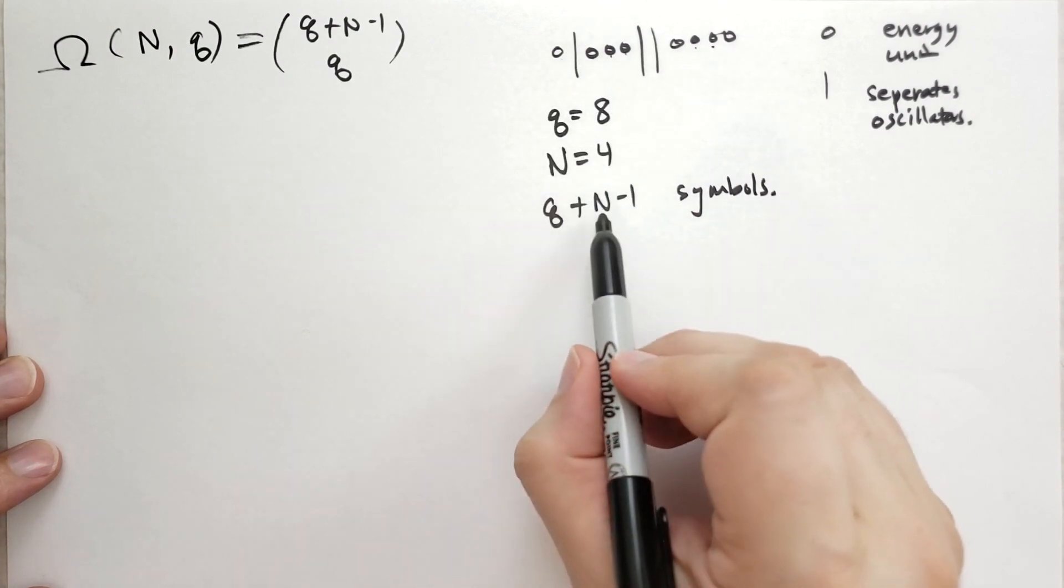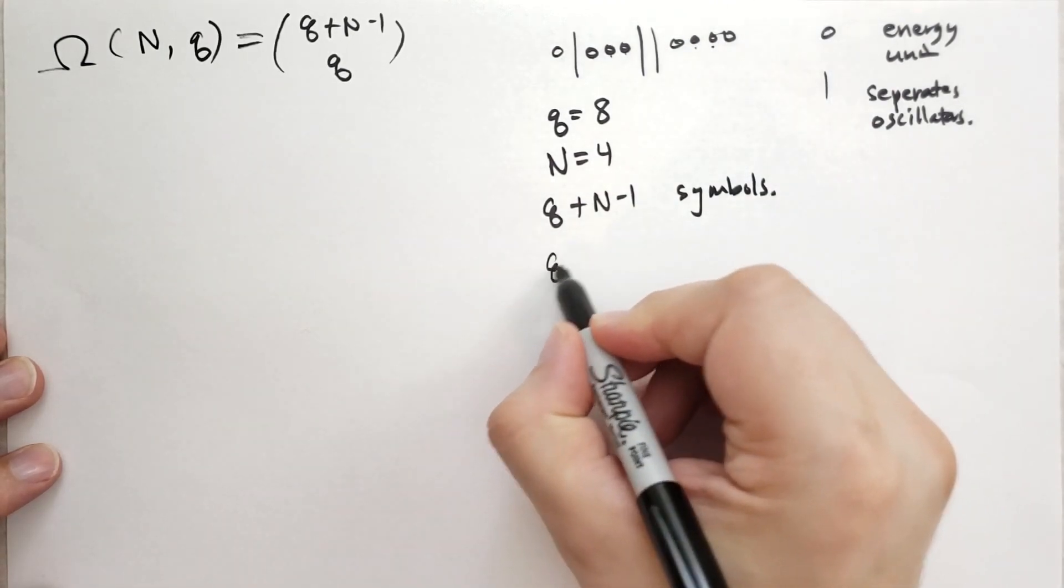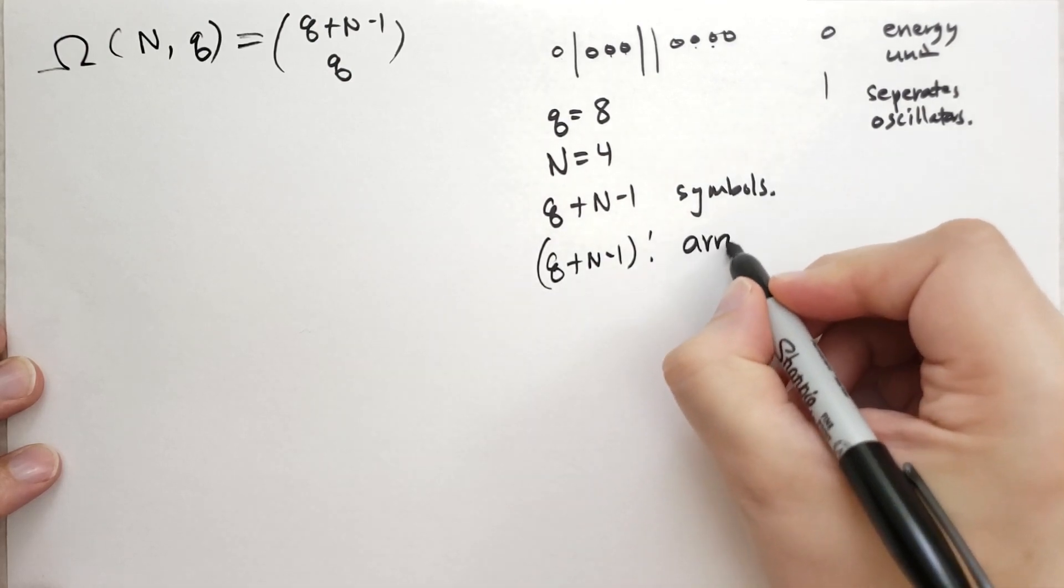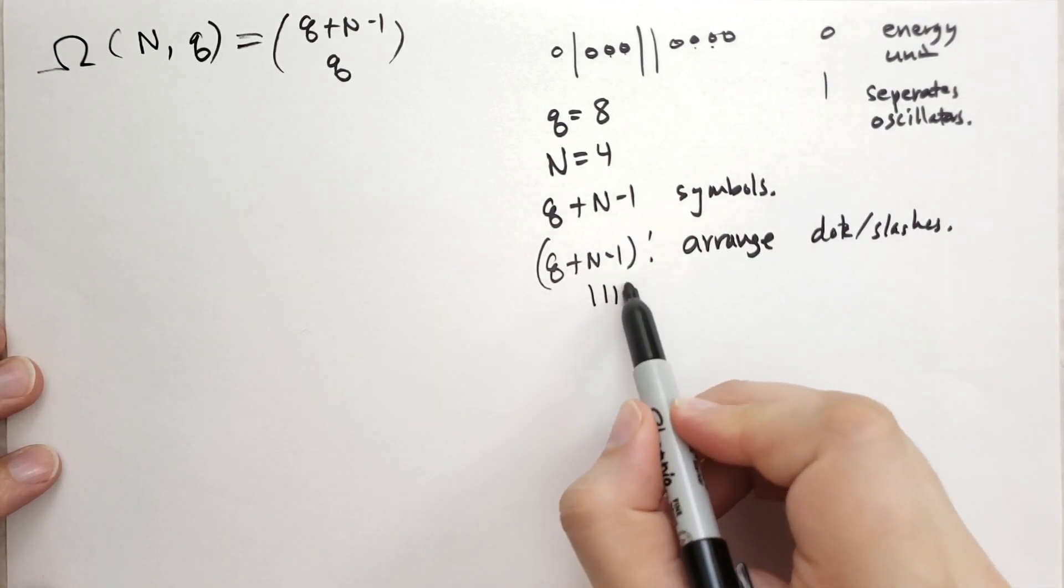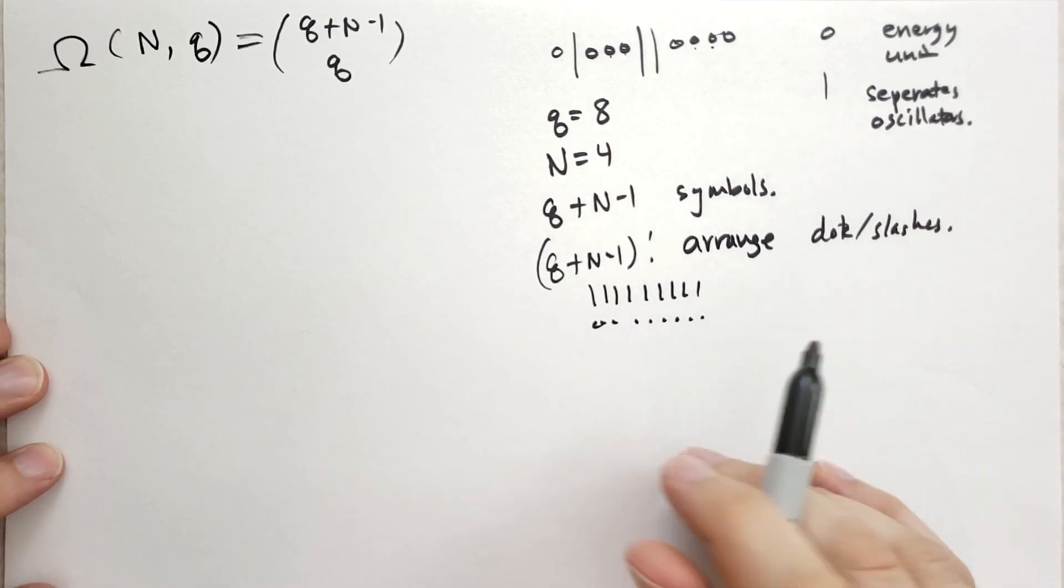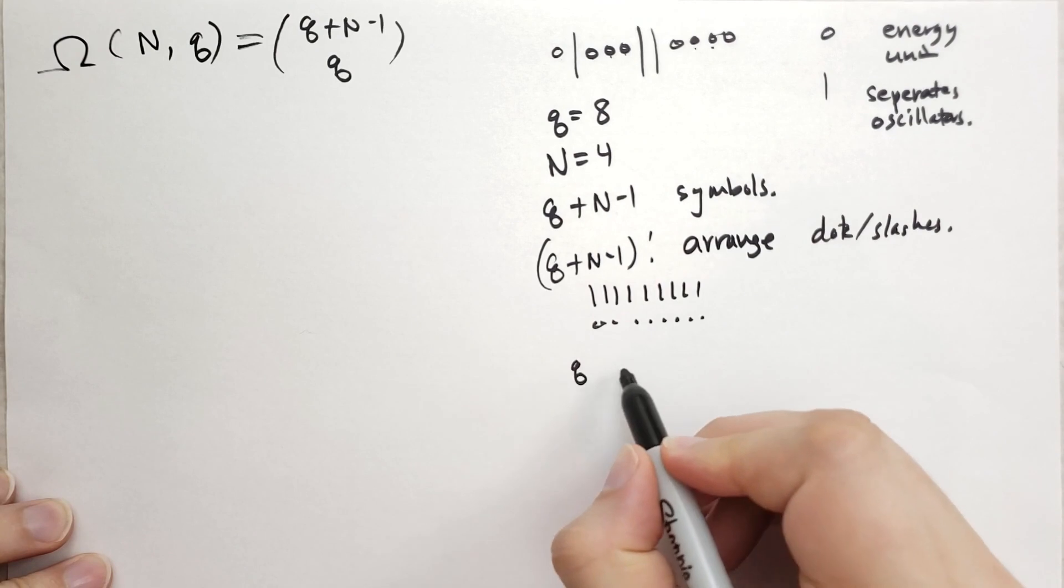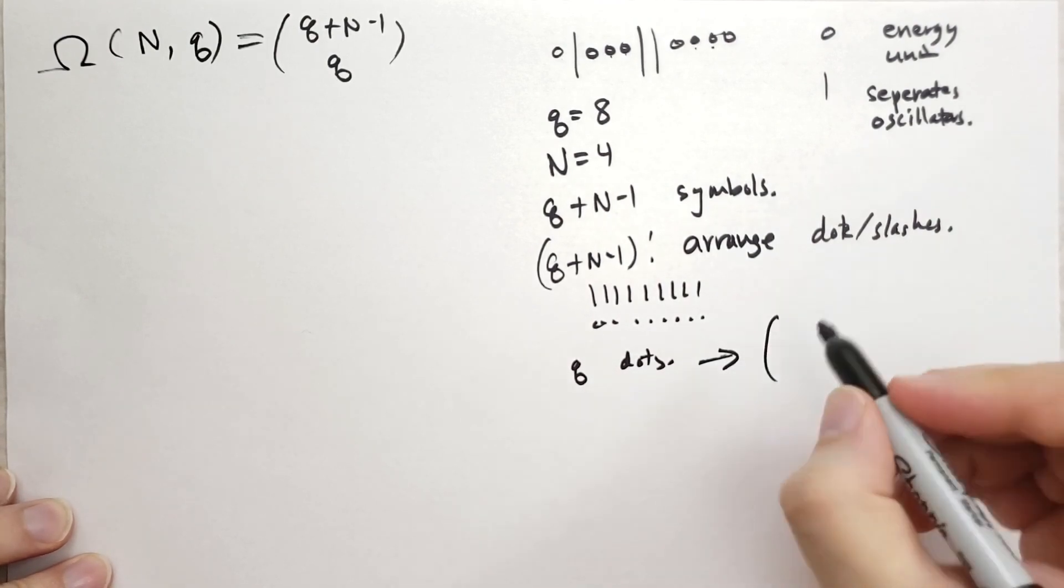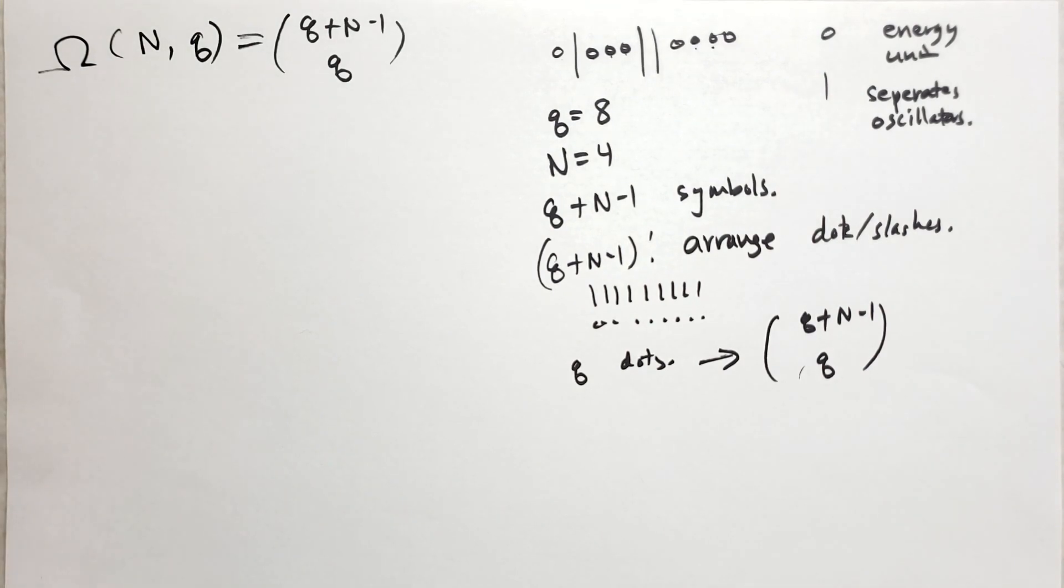So you need a symbol for each dot, and you need N minus one slashes. So if there's four oscillators, you need three separators. So that means there are Q plus N minus one ways to arrange the dots and slashes. This would include everything a slash. It would include everything a dot. And so what we need to do is choose only the ones that have a certain number of symbols. There are Q, we need Q dots total. So that means this is going to give us the formula where we take Q plus N minus one, and then we only want Q of them to be chosen. That's a fairly hand-wavy proof. If you want to do a more thorough proof and count for yourself, this is a good opportunity to exercise your newfound ability to count things.